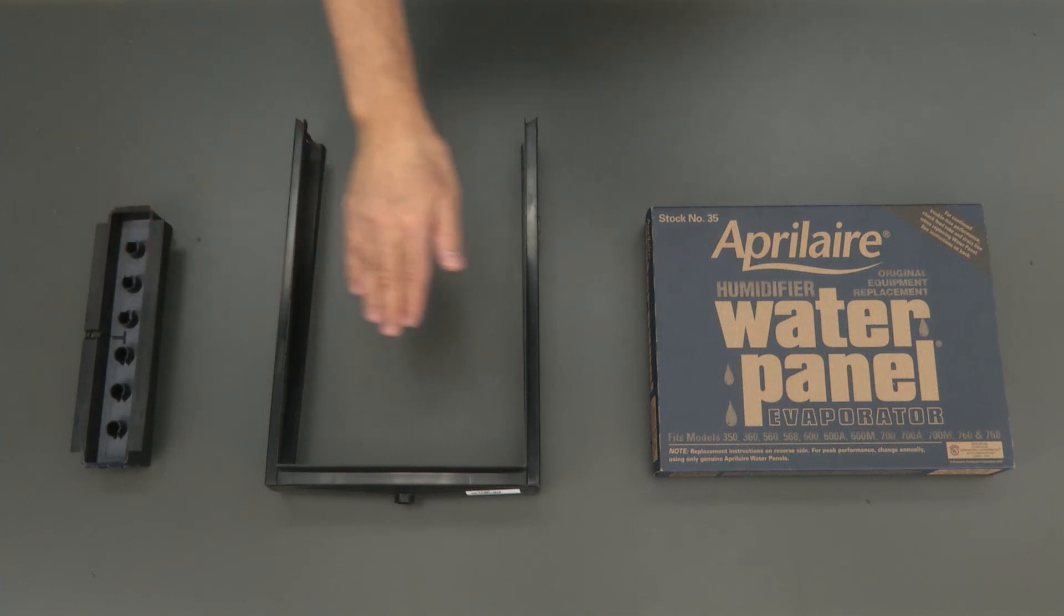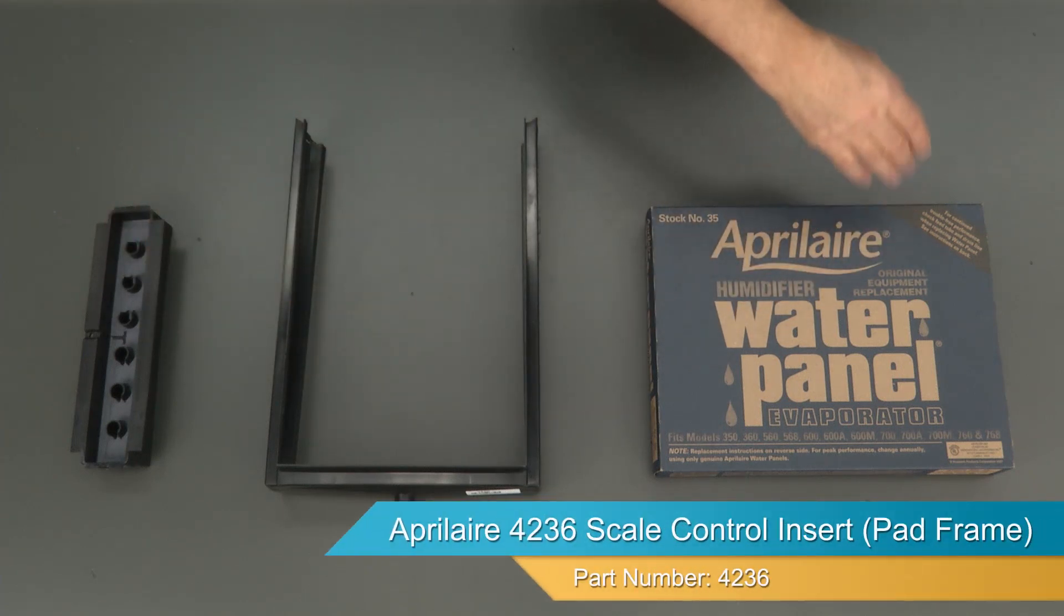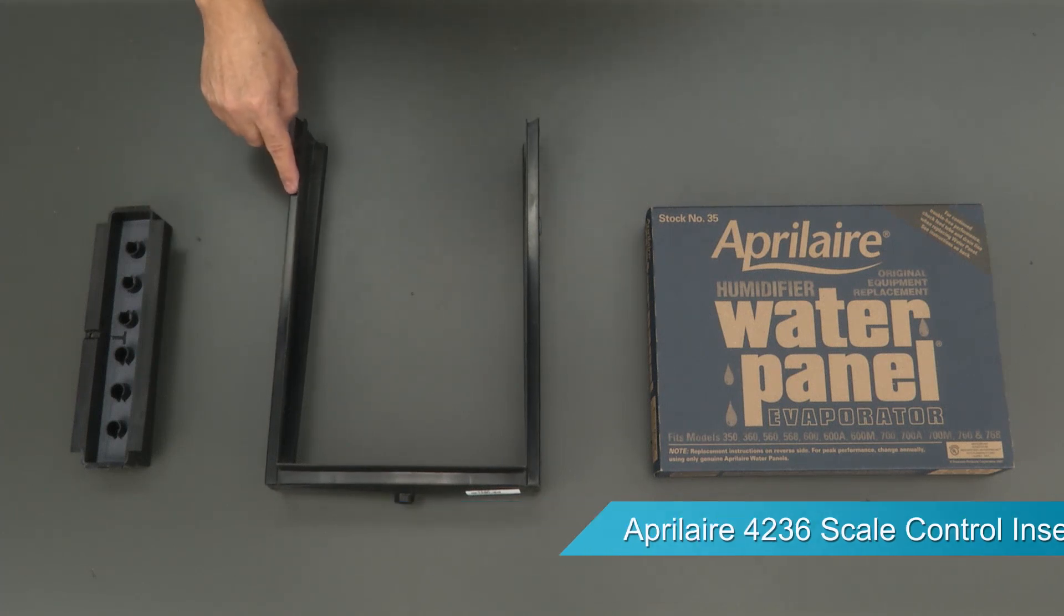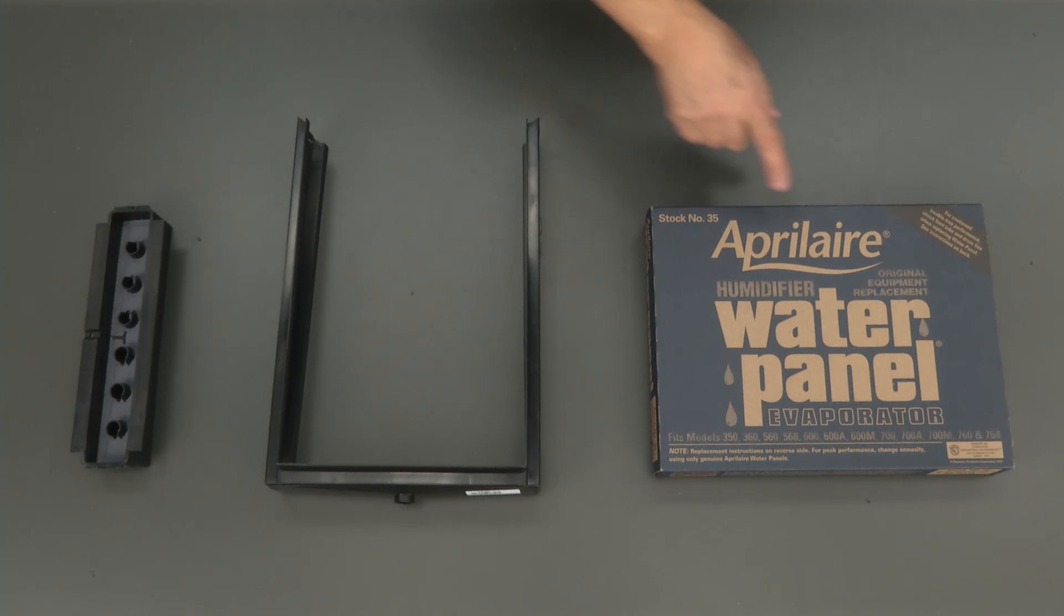These components are common to most Aprilaire humidifiers. The parts in your model may look slightly different, but the assembly procedure is similar. The plastic components should be washed using mild soap and water prior to replacing the water panel, which must be replaced annually.